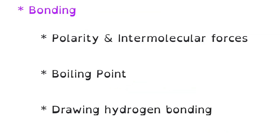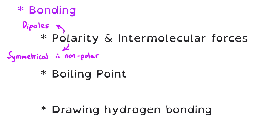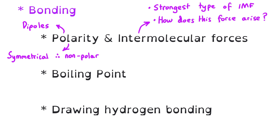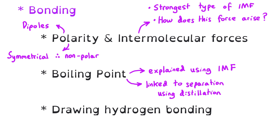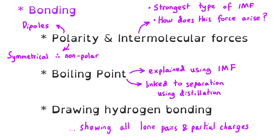The most likely bonding subtopics to come up are whether a molecule is polar — whether it has a polar bond or whether it has complete symmetry and is therefore non-polar in spite of polar bonds — and what the strongest type of intermolecular force might be in an organic molecule and how that force arises. Building on that, we could get boiling points of different organic molecules potentially linked to a distillation practical and which molecule might evaporate or collect in the distillate first. And we could be asked to draw the hydrogen bonding in an organic molecule or between two organic molecules, showing all lone pairs and partial charges.